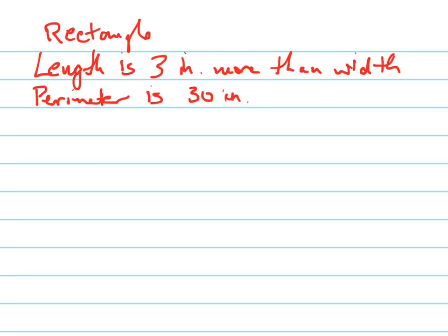Here's a word problem. It says the length of a rectangle is 3 inches more than its width. The perimeter of the rectangle is 30 inches. The first thing they want us to do is to define the variable for the width. So let's draw a picture of our rectangle first.